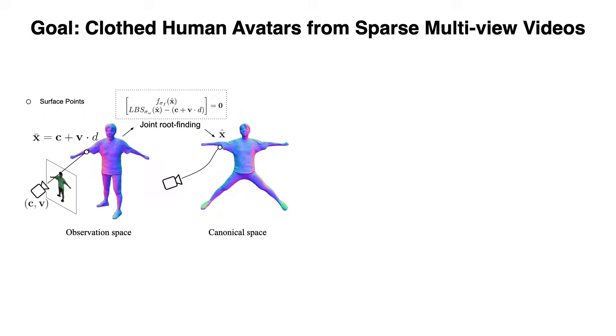Given the results from coarse sphere tracing as initializations, we propose a joint root-finding algorithm to find the exact surface point represented as ray-depth in observation space and point in canonical space.